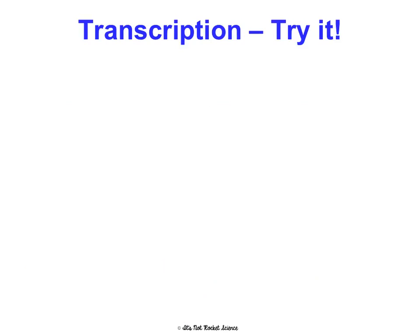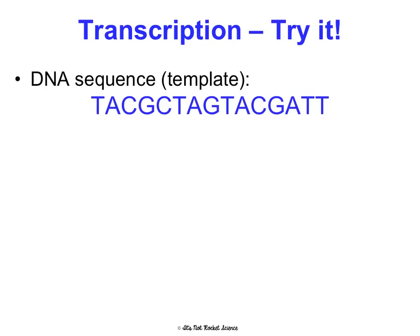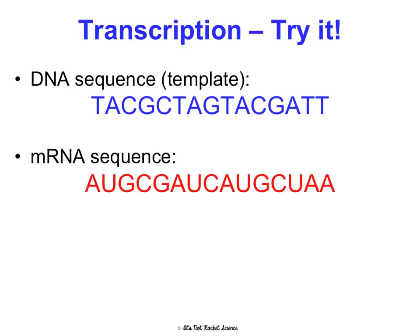For a practice problem, I may give you a template strand of DNA — just one side of a DNA molecule — and you would have to tell me the mRNA sequence. Using RNA base pairing rules: T pairs with A, A pairs with U, C pairs with G, G pairs with C. Notice there are no T's in the mRNA.